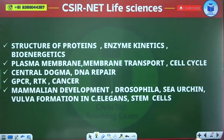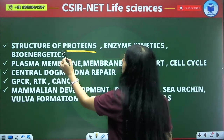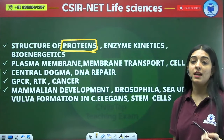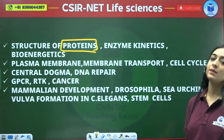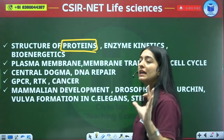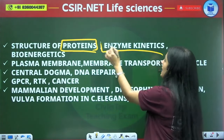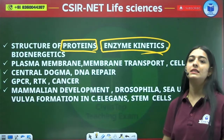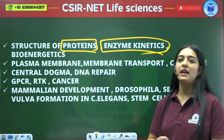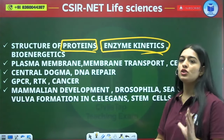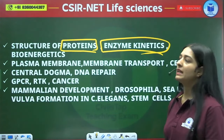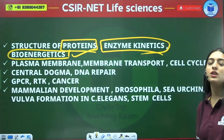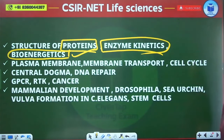Your first topic is the structure of proteins — the alpha-helical structure, secondary structure, and the Ramachandran plot of proteins. Next is enzyme kinetics. These are topics where there are high chances you will see questions every time. Bioenergetics is also a topic you should prepare properly with surety.